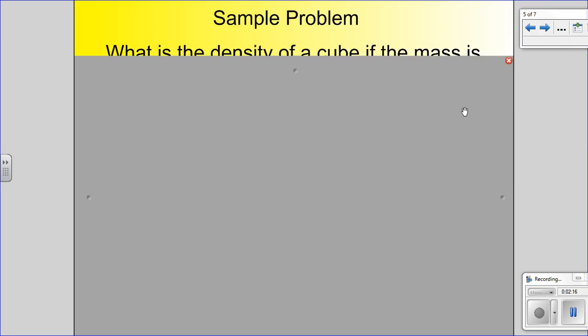Let's do a sample problem. This will make a lot more sense. What is the density of a cube if the mass is 36 grams? So we're given the mass, 36 grams. It says it right here. So that part is going to go on top of our heart, but we don't know the volume yet.